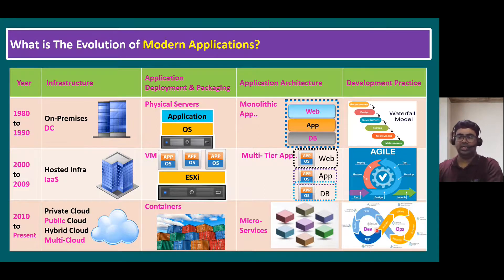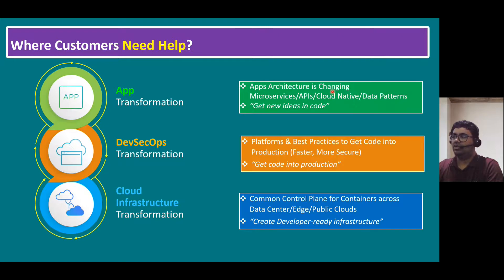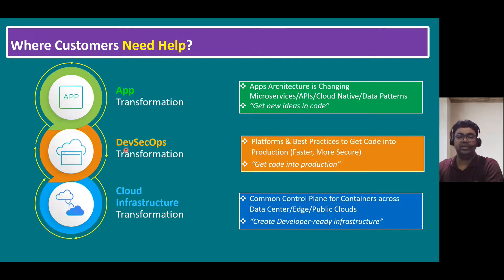Most customers need help in mainly three scenarios. The first is application transformation — the modern application architecture is changing from monolithic to tier-based to microservices, all cloud-native with infrastructure as code. The second is DevOps, and its advancement, DevSecOps — Dev Security Operations. DevSecOps is another key concept we need to learn, covering platforms and best practices to get code into production faster and more securely.